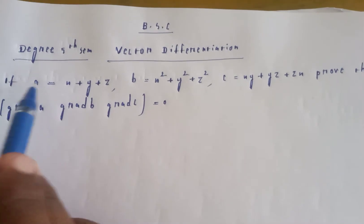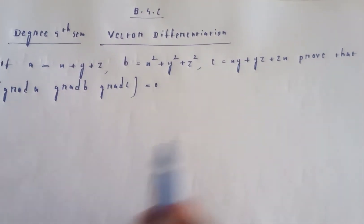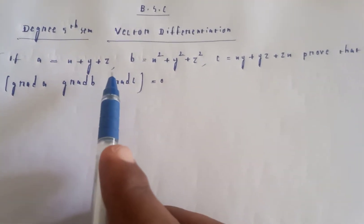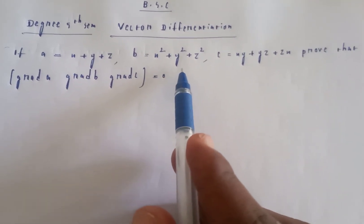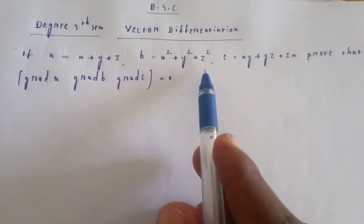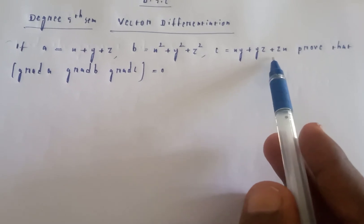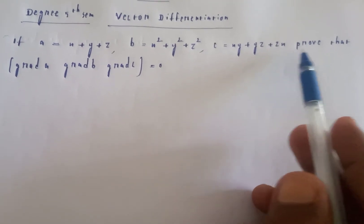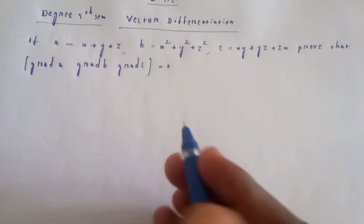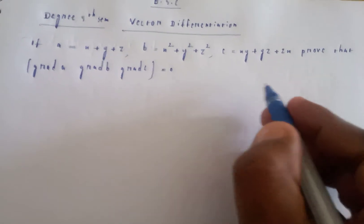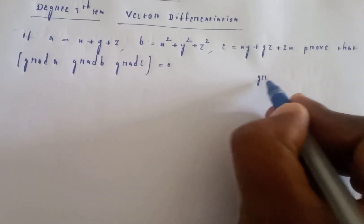Welcome to my channel. BSc degree vector differentiation problem: if a is equal to x plus y plus z, b is equal to x squared plus y squared plus z squared, c is equal to xy plus yz plus zx, prove that grad a, grad b, grad c — that is, the scalar triple product — equals zero.